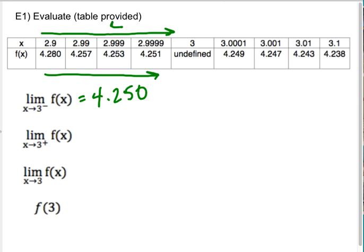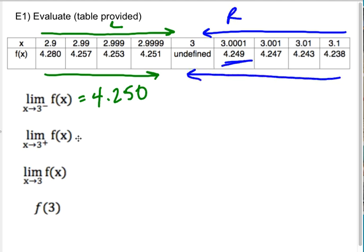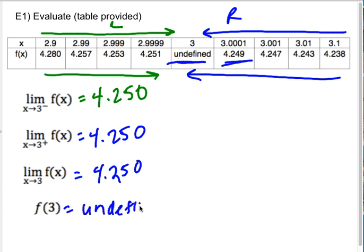If I look from the right, these numbers are getting closer and closer to 3, but from numbers that are higher than 3. And sure enough, this also seems to be approaching 4.250. Because those two numbers are the same, my double-sided limit will also be 4.250. But it says clearly that f(3) is undefined.